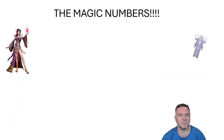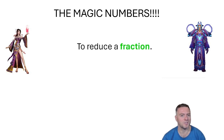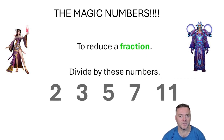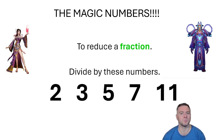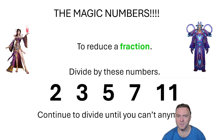So the magic numbers to remember — hopefully from the highest common factor — are 2, 3, 5, 7, 11. Those are the prime numbers we talked about before. If you keep dividing by those numbers, you'll always get the fraction down to its smallest form. Continually divide by those numbers until you can't divide them anymore.